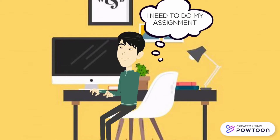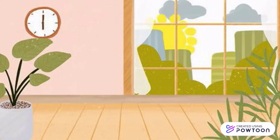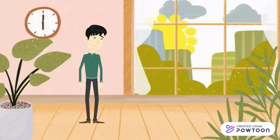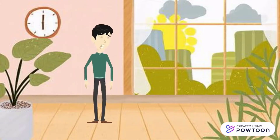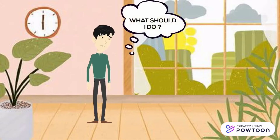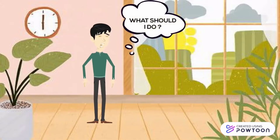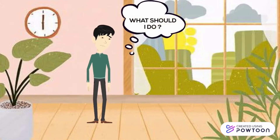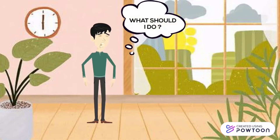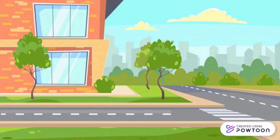Regrettably, John was unable to find the information. John is anxious because he is unable to complete his homework properly. He was depressed and worried because his assignment could not be completely finished. Finally, he called his friend to discuss his problem.